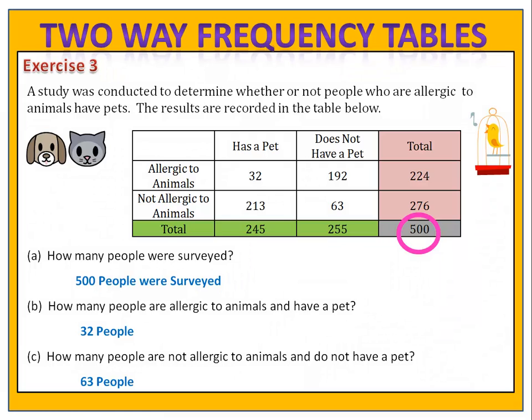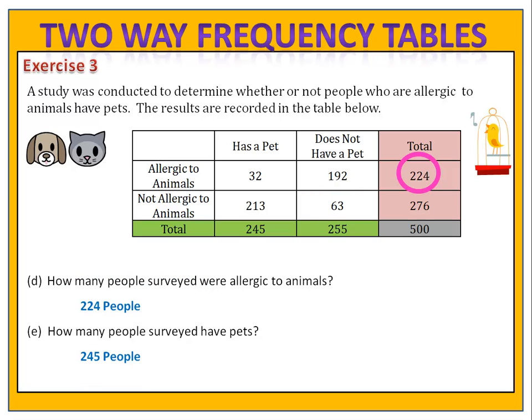We found that there were a total of five hundred people surveyed. Thirty-two people have a pet but are allergic to animals, and sixty-three people do not have a pet and are not allergic to animals. A total of 224 people in our study were allergic to animals, and 245 people have pets.